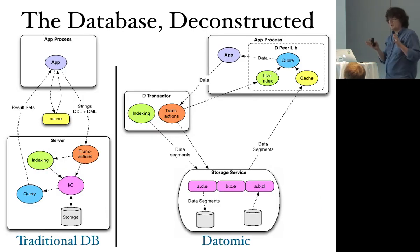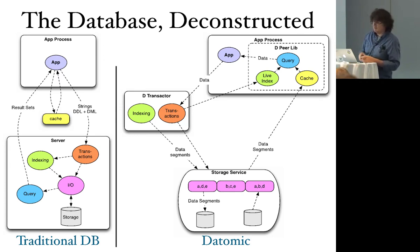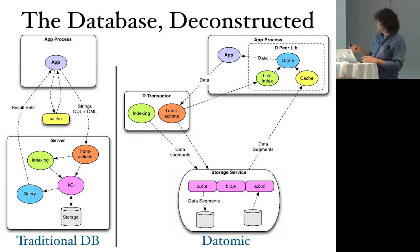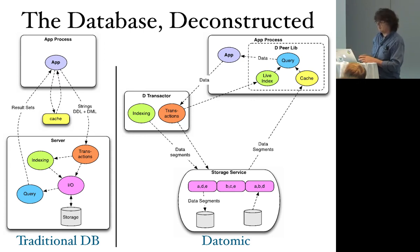One way to look at this is to take the pieces of the traditional architecture and see where they end up. In a traditional monolithic database, it does indexing, transactions, IO to storage, and handles query load. Your application doesn't have much power — it's completely relying on the server to do all the thinking. Applications often add a caching layer manually because this unit gets overloaded. Applications issue expensive queries and then manually cache results to avoid overloading the centralized resource.